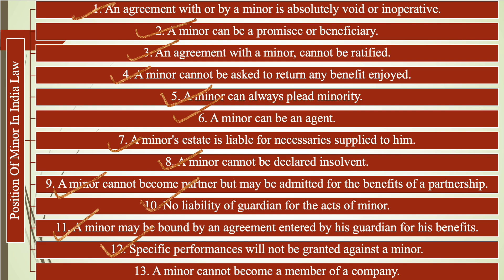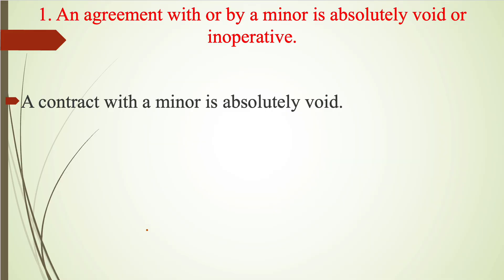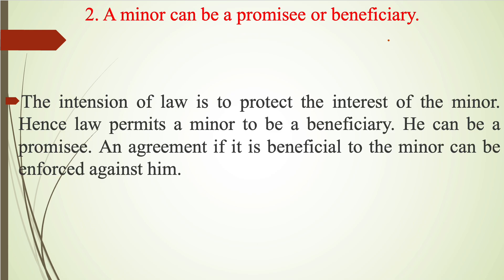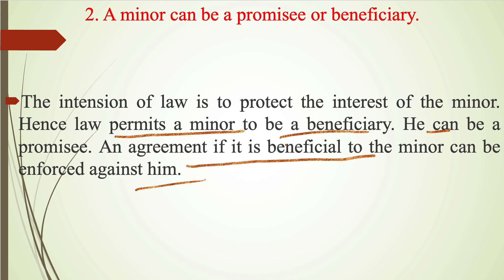Now we are discussing each of the points one by one in detail. First, an agreement with or by a minor is absolutely void or inoperative — a contract with a minor is absolutely void because a minor is not able to enter into a contract according to Indian law. Second, a minor can be a promisee or beneficiary. The intention of law is to protect the interest of the minor, hence law permits a minor to be a beneficiary. He can be a promisee, and an agreement that is beneficial to the minor can be enforced in his favor.